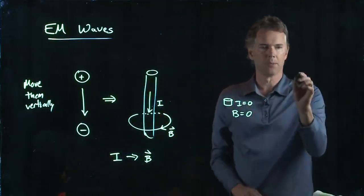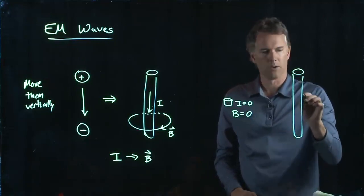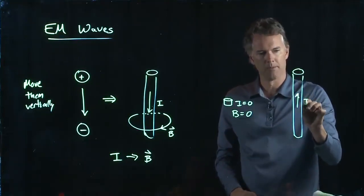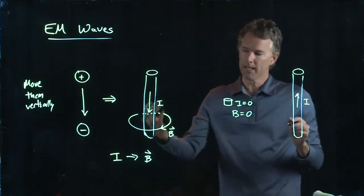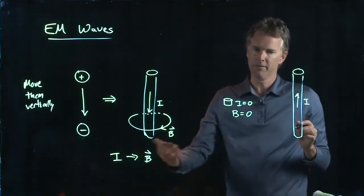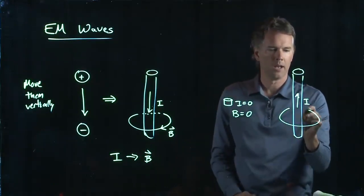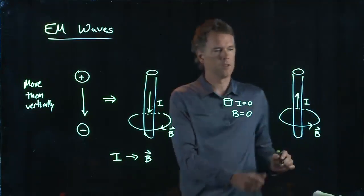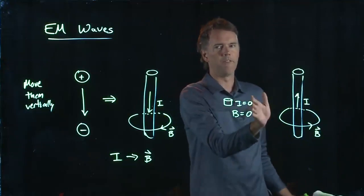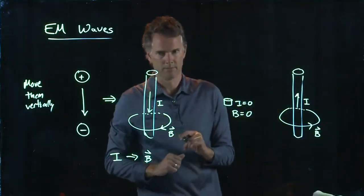And later on, as we keep going, the current is going to change direction. The current is going to be going up later on. And if current is going up, we again develop a B field. And you use your right-hand rule. And now it's wrapping around this way. Thumb in the direction of the current. Fingers are wrapping around in the direction of the B field.